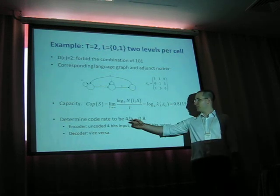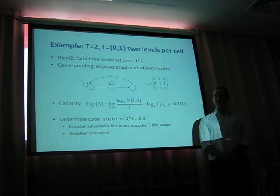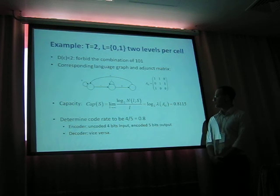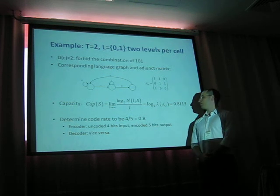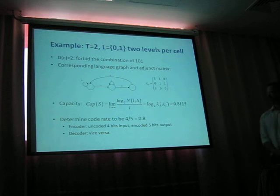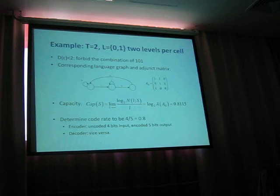We want to construct the encoder and decoder as close to this capacity. Let's choose the code rate to be 0.8, in which we input 4 values and output 5 values. So the encoder gets uncoded 4-bit input and encoded 5-bit output, and the decoder is vice versa.